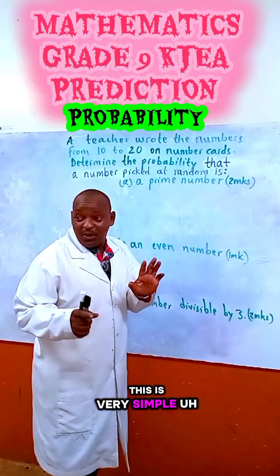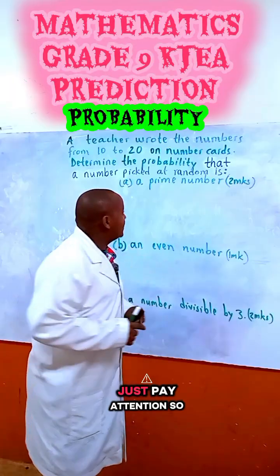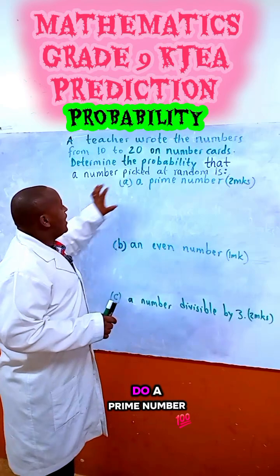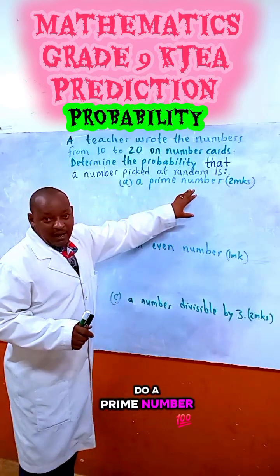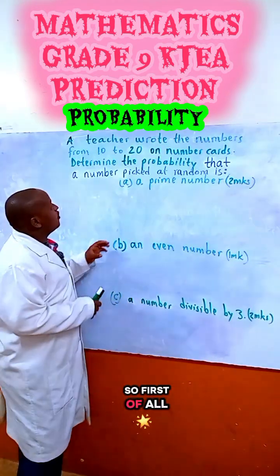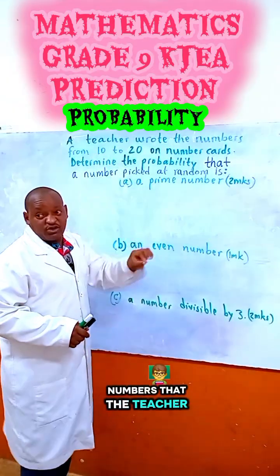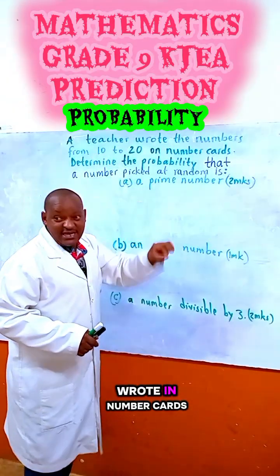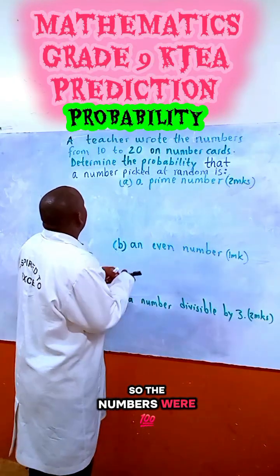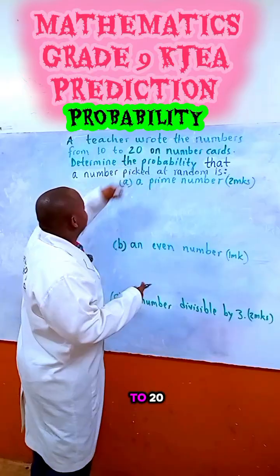This is very simple. Just pay attention. So, this is what we do — a prime number. First of all, let us write the numbers that the teacher wrote on the number cards.